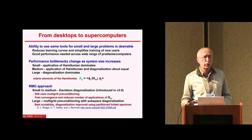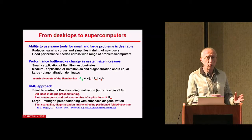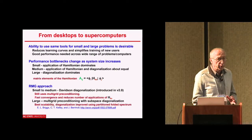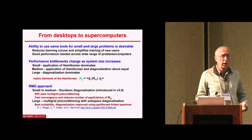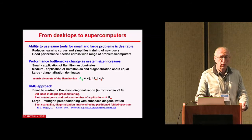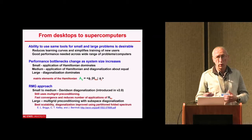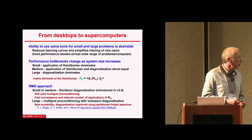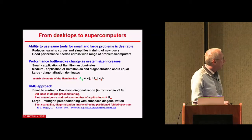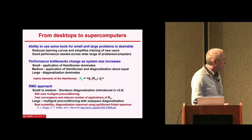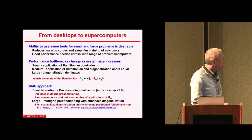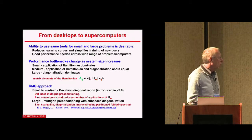The goals for the new release: we want to seamlessly scale from desktops to supercomputers, so new students and users can play on their home machines, then move to a larger machine and then an even larger machine — all with the same code, the same user interface, and the same set of tools. Performance bottlenecks will be different as system size increases: small systems are dominated by the Hamiltonian, medium by Hamiltonian diagonalization, large by diagonalization, and so on.